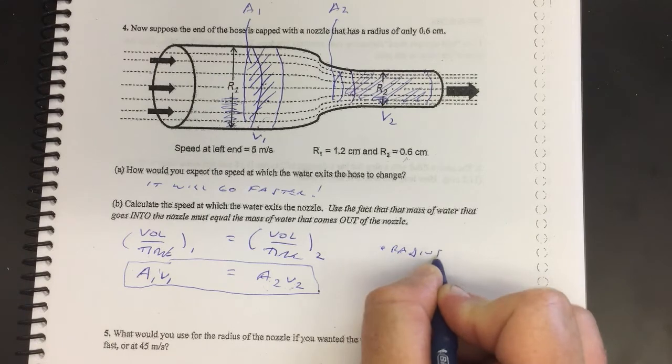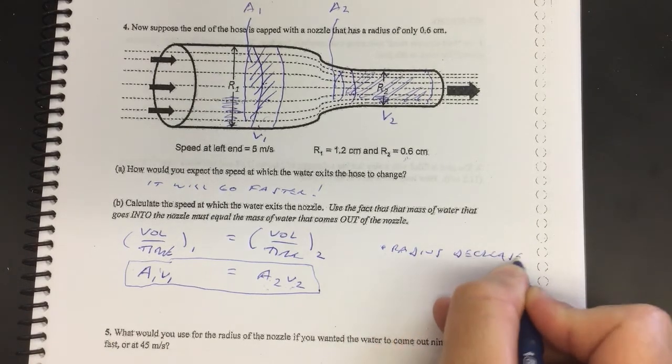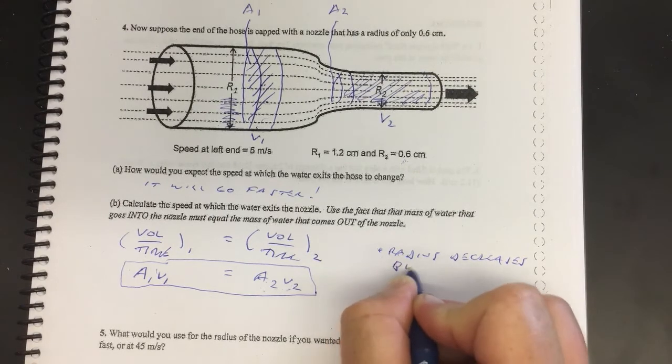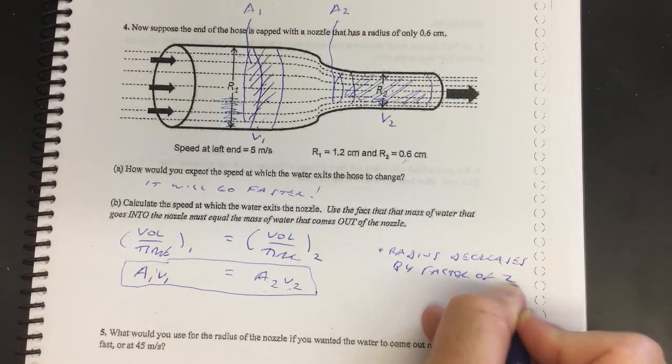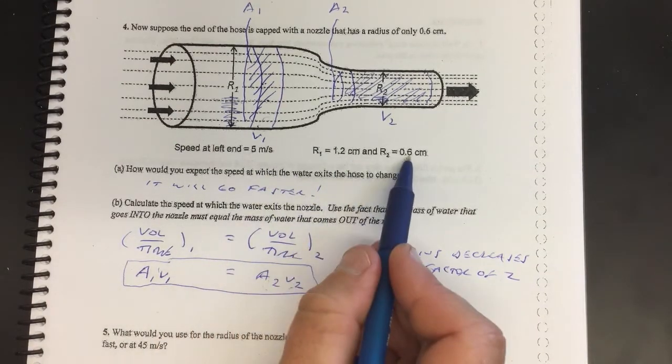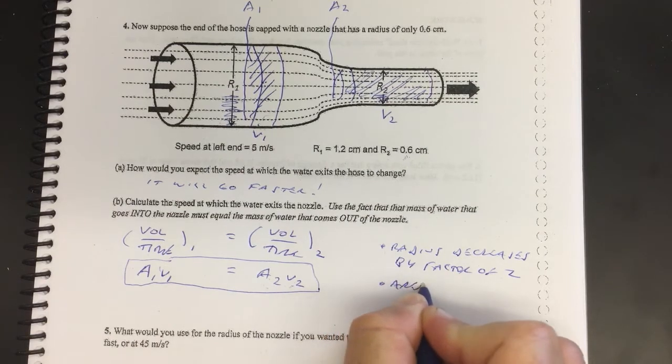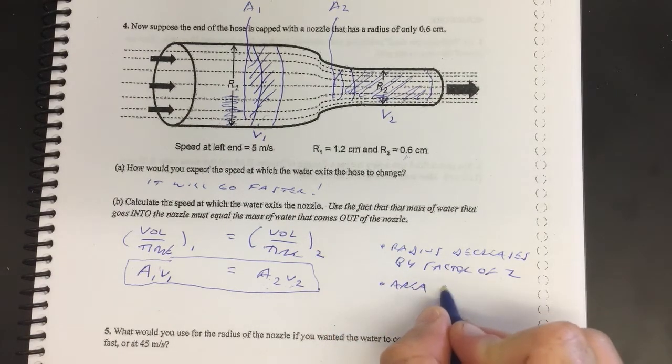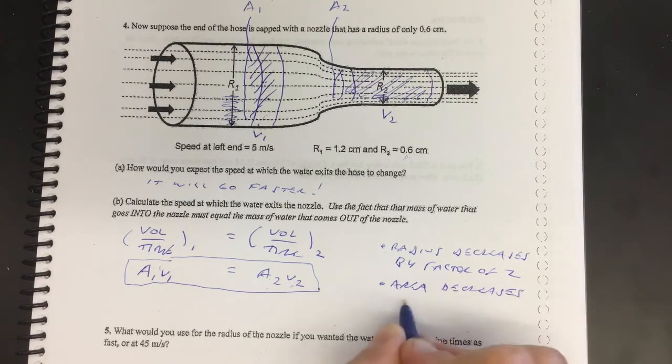What do I mean by that? Well, it used to be 1.2, now it's only 0.6, so the radius went down by factor two. Now that means the area decreases by a factor of four.